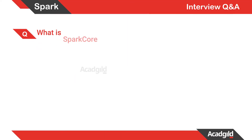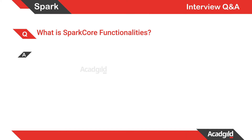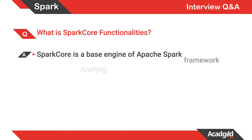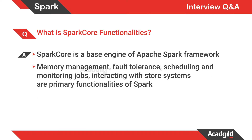Spark Core is the base engine for the Apache Spark framework. It handles memory management, achieves fault tolerance, performs scheduling and monitoring of jobs, and interacts with a storage system — which is a primary functionality of Spark.